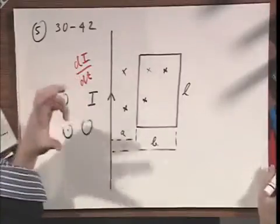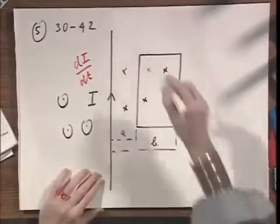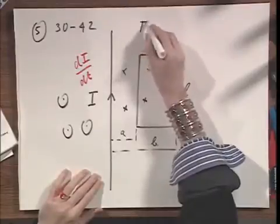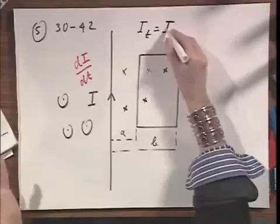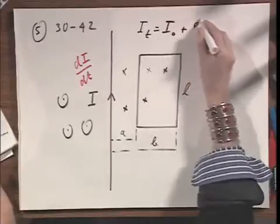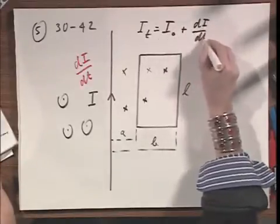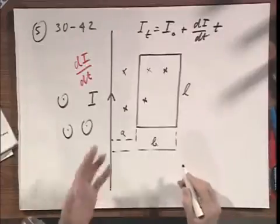The di dt will make the current grow, and so I, as a function of time, equals some I zero, at time equals zero, plus di dt times t. It's growing linearly.